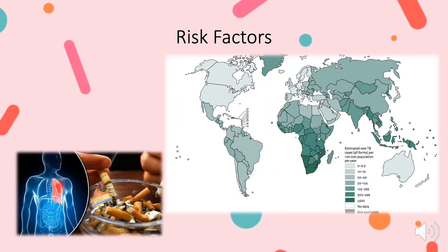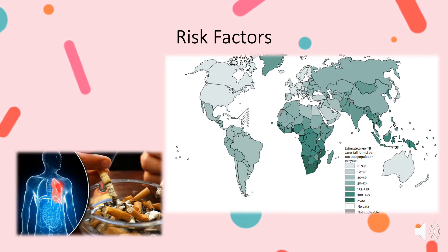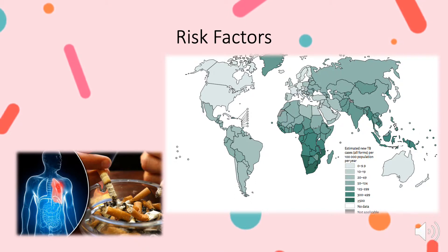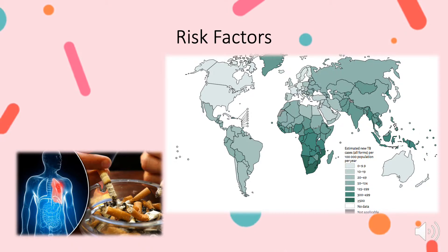People who are immunocompromised are more likely to develop TB, as well as those who have been diagnosed with cancer. People who smoke are also at risk because smoking impairs the pulmonary system, which would normally be able to fight off the pathogen. TB is also the leading cause of death among people living with HIV, and thousands of people die yearly from AIDS-related tuberculosis. On this slide is a map of TB incidences around the world, with darker green areas showing a higher average of TB infections. Many of these areas suffer from poor sanitation, which is why there seem to be more cases there.